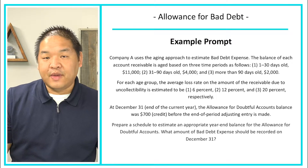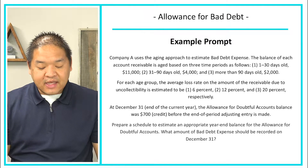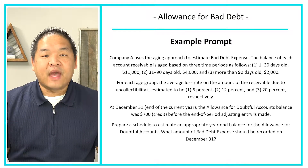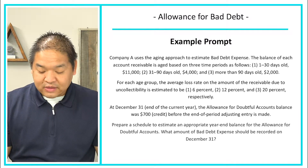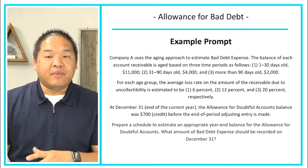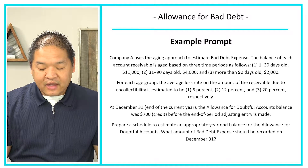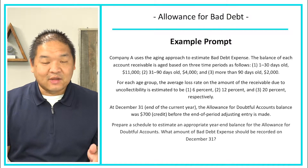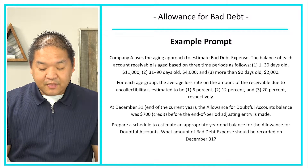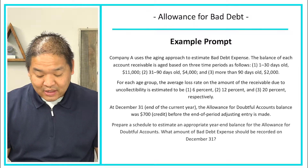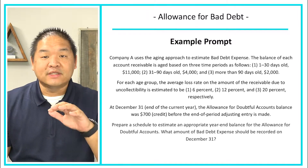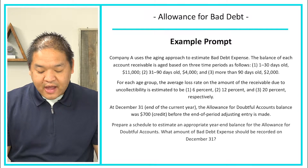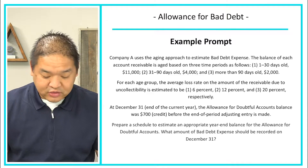Let's look at our example prompt. Company A uses the aging approach to estimate bad debt expense. The balance of each account receivable is aged based on three time periods: one through 30, 31 to 90, and 90 and above, with the amounts shown on screen. For each age group, the average loss rate due to uncollectibility is estimated to be 6%, 12%, and 20% respectively. At December 31st, the allowance for doubtful accounts balance was a $700 credit before the end-of-year adjusting entry is made.